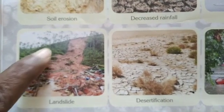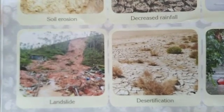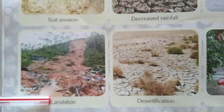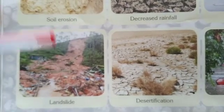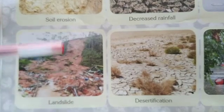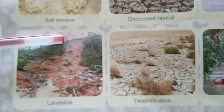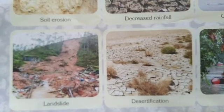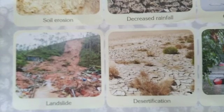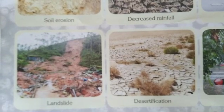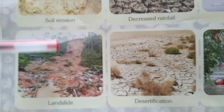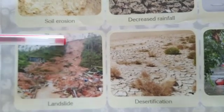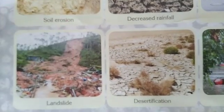The next threat is landslides. Landslides mostly arise in Uttarakhand, because most of the mountains in Uttarakhand are made of soil, making them prone to landslides.